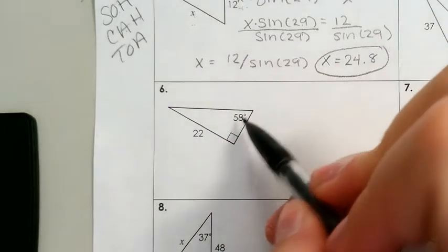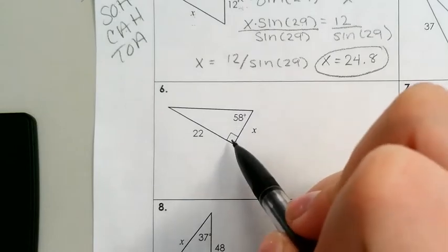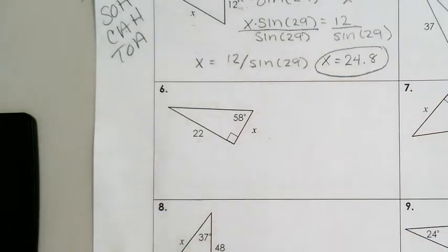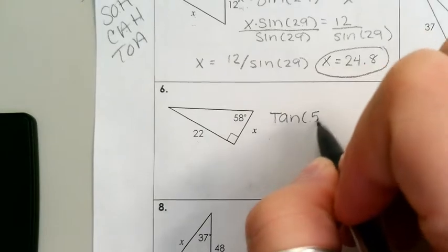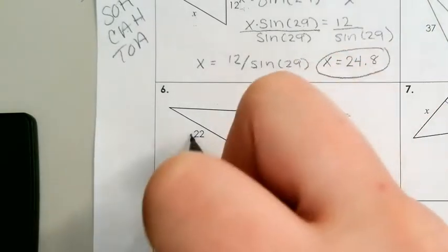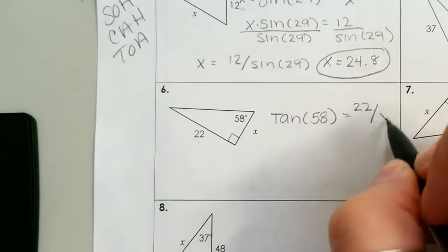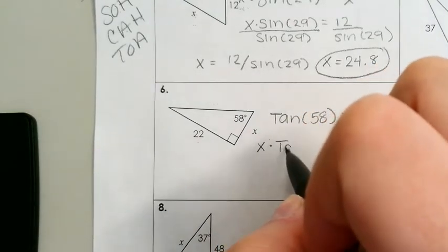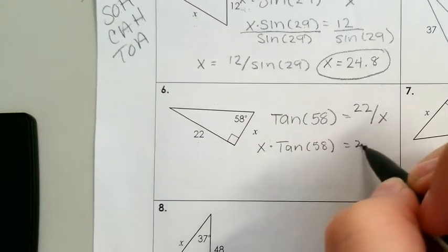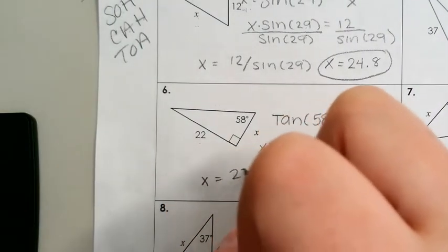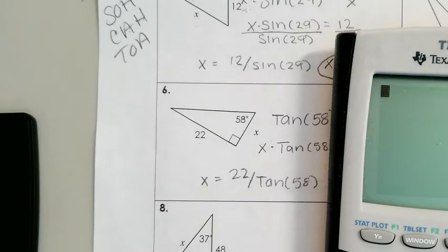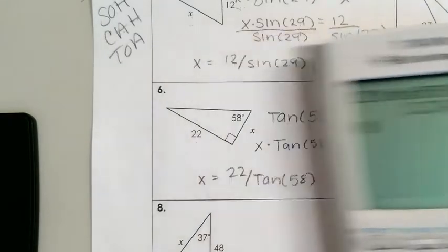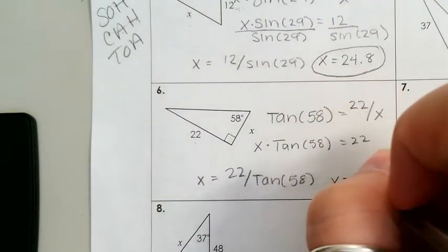Let's see if you have the answer right. In this problem, we have 50 degrees and two legs — no hypotenuse — so we can't use sine and cosine. Therefore, we have to use tangent. The tangent of 58 degrees is equal to opposite over adjacent, which gives us 22 over X. In your calculator, 22 divided by tangent of 58 is equal to 13.7. So X is equal to 13.7.